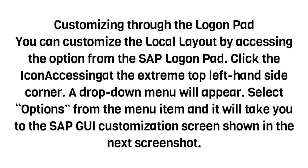You can also customize the local layout by accessing the option from the SAP logon pad. Click the icon at the extreme top left-hand side corner. A drop-down menu will appear. Select Options from the menu item and it will take you to the SAP GUI customization screen shown in the next screenshot.